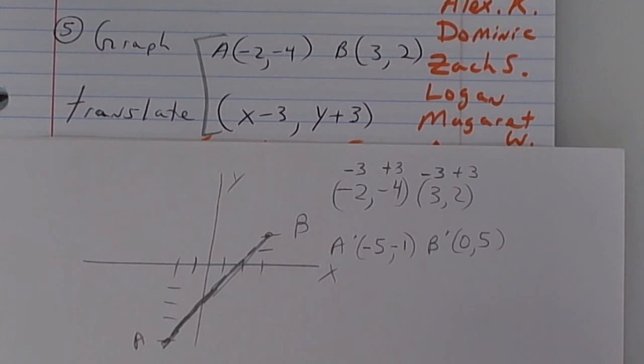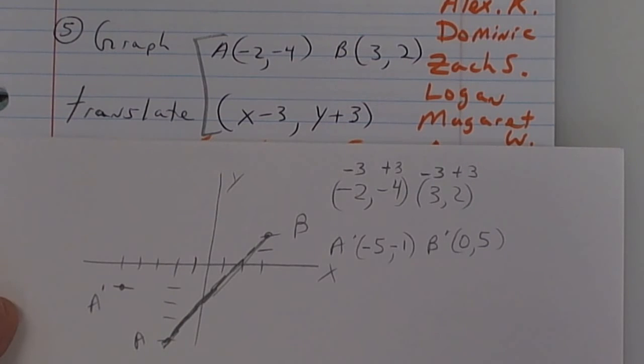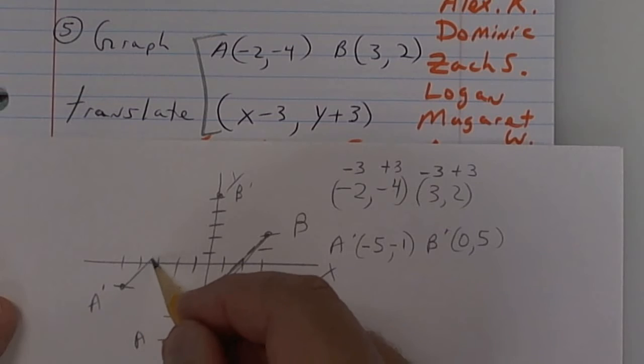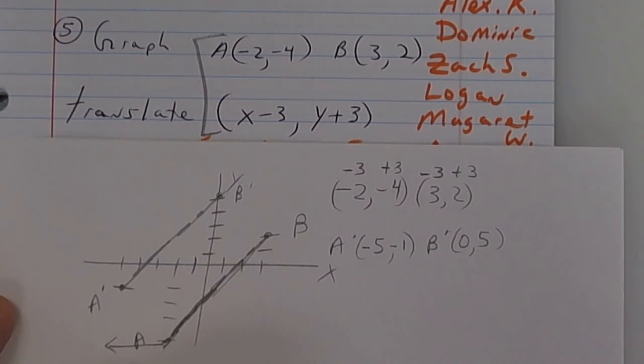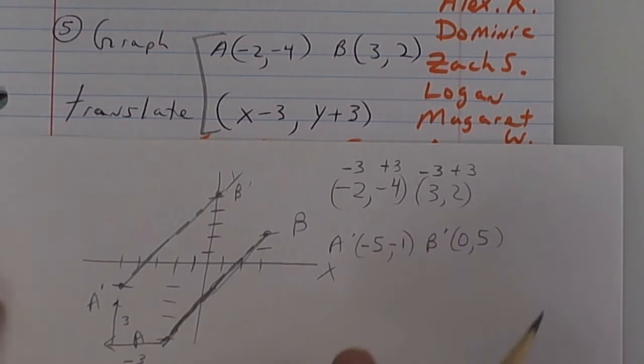Graph the new points. One of them is called the pre-image and one of them is called the image. Label which one is the pre-image and label which one is the image. This one right here is going to be a negative 5. So 1, 2, 3, 4, 5 and then down 1. So put A prime. And then the other one is over 0. Again, this is not really hard. You can do it. And if you look at it, it looks like we did slide it over this way 3 spaces and then we did go up 3 spaces. And that's all we did. We just took it and slid it.